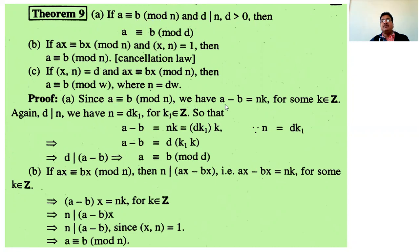Therefore a minus b is expressed in the form n into some integer. This is our assumption that a is congruent to b modulo n. What we have to show is that a is congruent to b modulo d. When a is congruent to b modulo d, d divides a minus b, that is, a minus b is expressed in the form d into some integer.